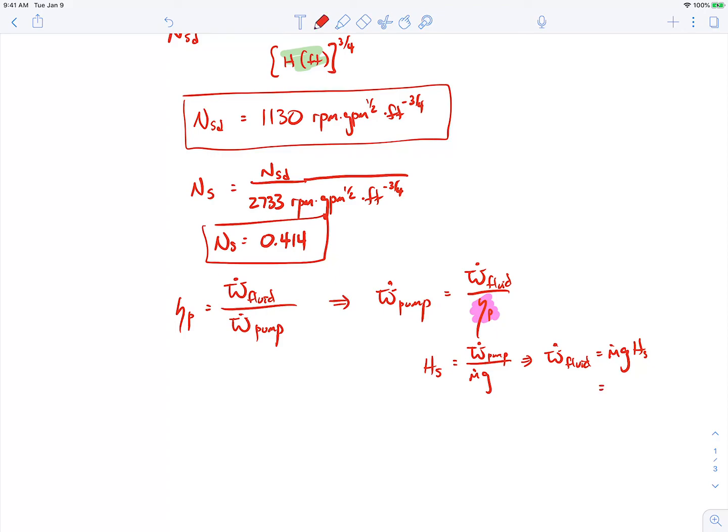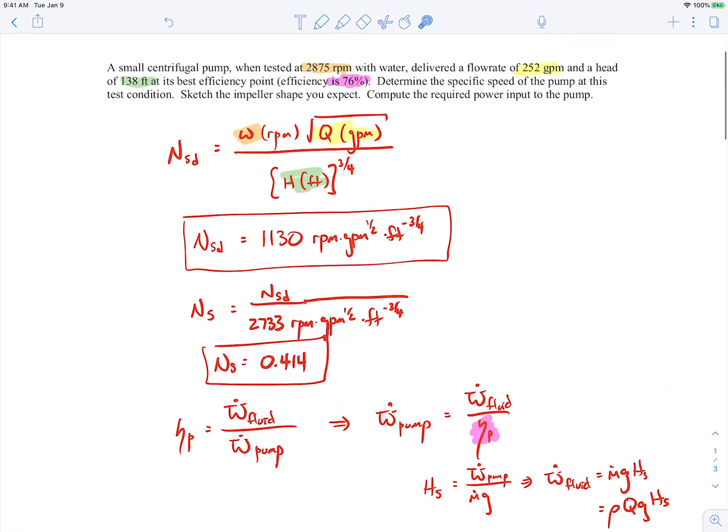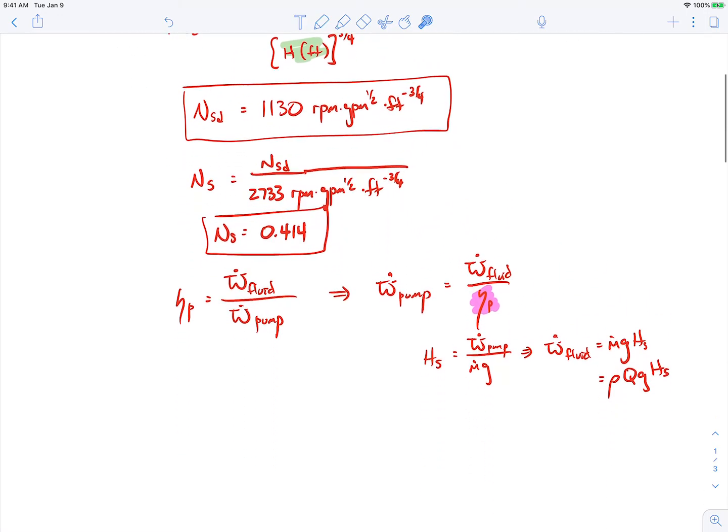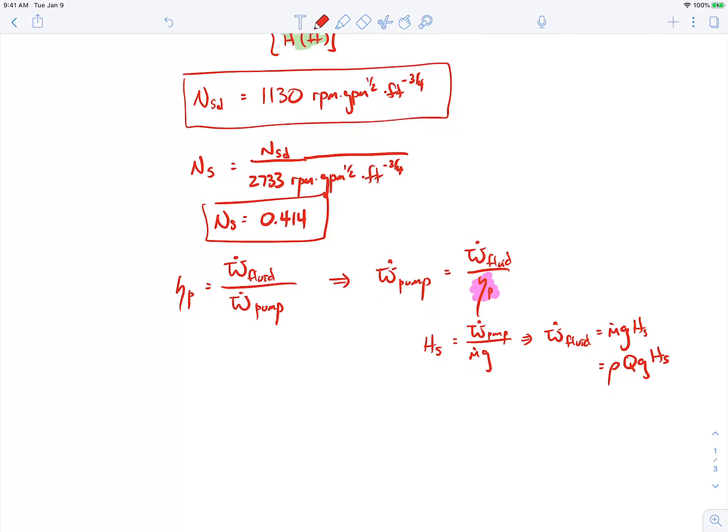Mass flow rate, we can relate to the volumetric flow rate by multiplying by the density. We're given these quantities. We're given that we're dealing with water. We're given the volumetric flow rate. We know gravitational acceleration. We're given the head rise. The head rise was the 138 feet.